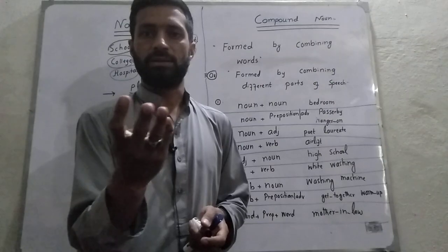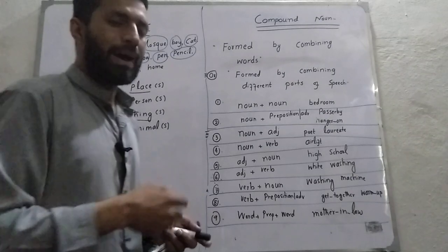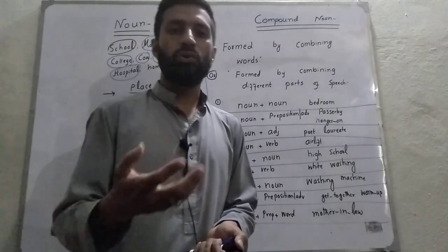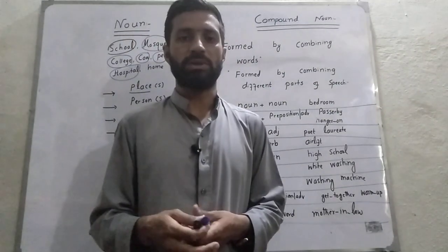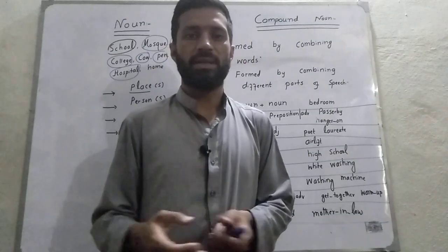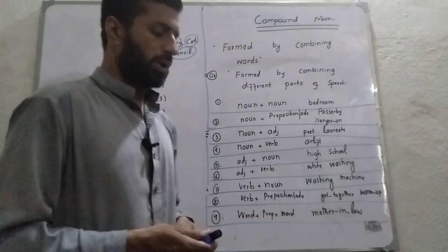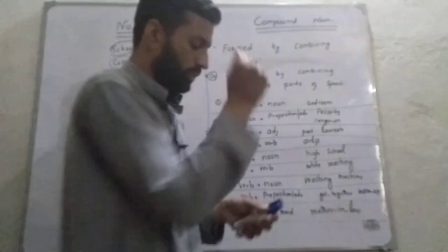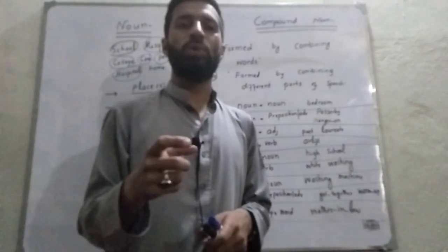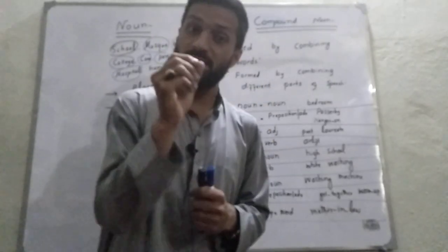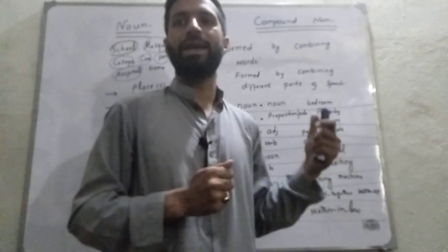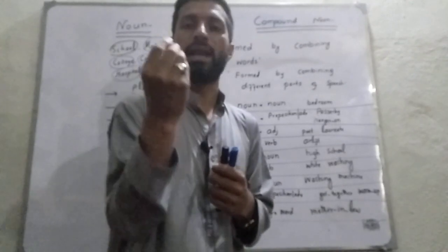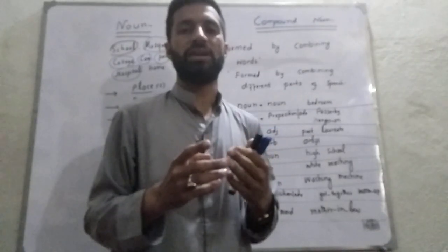Now we have the definition of the noun. My second section of today's video is compound noun. A compound noun is like the definition of compound in chemistry — whenever two substances are combined. A lot of people commit a mistake while defining compound noun; they define it as a noun formed by the combination of two nouns. This is only a part of the definition, not the full definition.